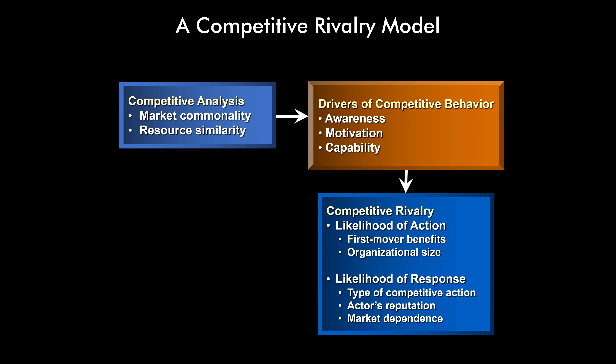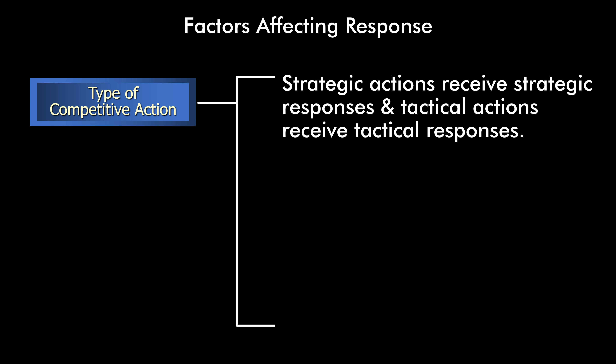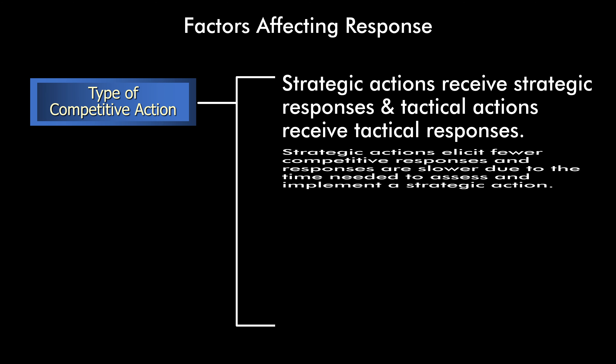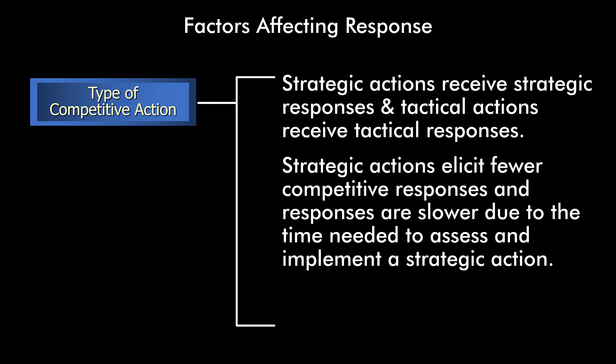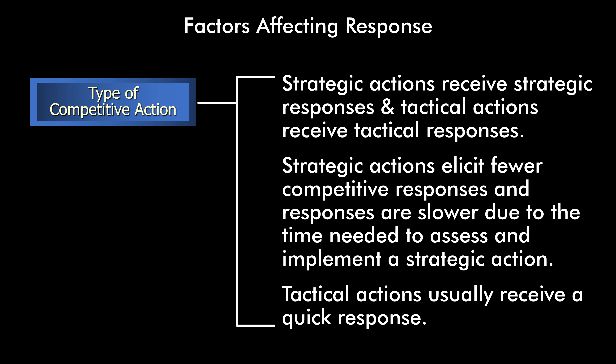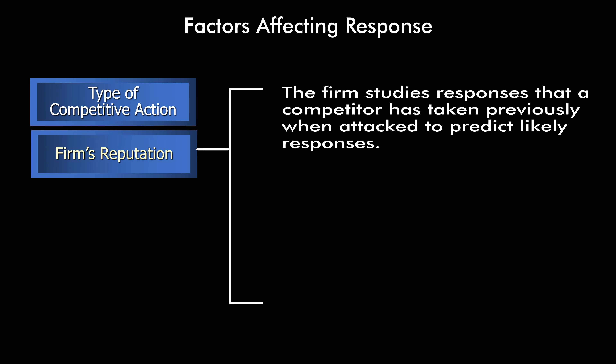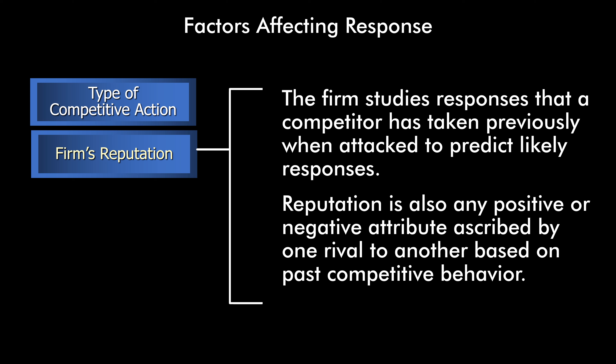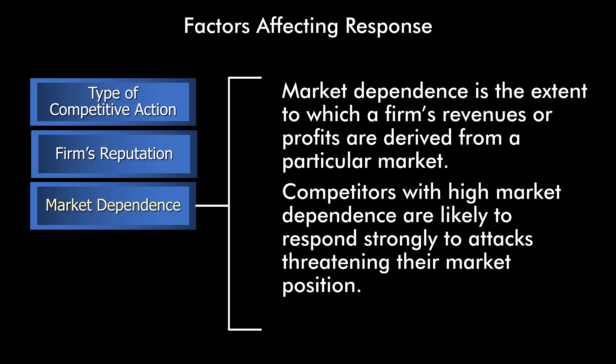Now we'll look at the likelihood of response. In factors that affect response, first we have the type of competitive action. Strategic actions receive strategic responses and tactical actions receive tactical responses. Strategic actions elicit fewer competitive responses and the responses are slower due to the time needed to assess and implement a strategic action. Tactical actions, however, usually receive a quick response. Firm reputation is also important — the firm will study the response a competitor has taken previously when attacked to predict likely responses. Reputation also includes any positive or negative attributes described by one rival to another based on past competitive behavior. Market dependence is the extent to which a firm's revenues or profits are derived from a particular market, and competitors with high market dependence are likely to respond strongly to attacks threatening their market position.